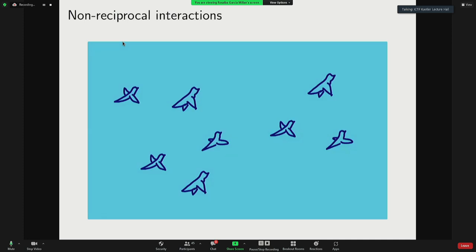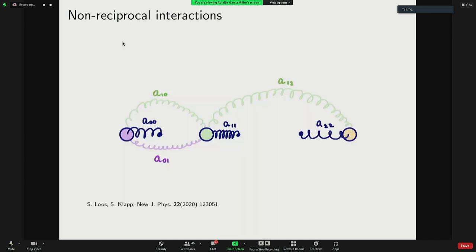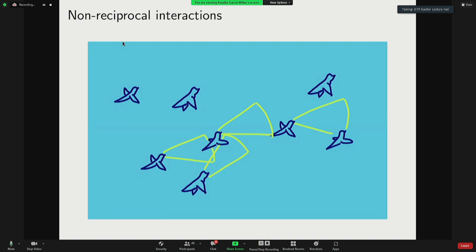There are many types of non-reciprocal interactions and sometimes they can be used to model certain phenomena. Here's an example of a bird in a flock. Sometimes we can model this phenomena by letting the birds align their velocity with their neighbors. But these birds are not able to see all their neighbors. In fact, they have a vision cone and so these interactions have a directionality. One bird will try to align with the bird in front of them, but not the other way around.